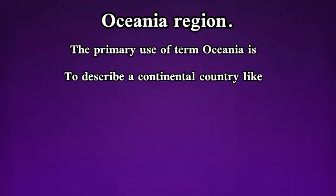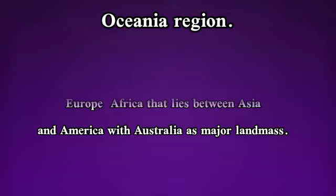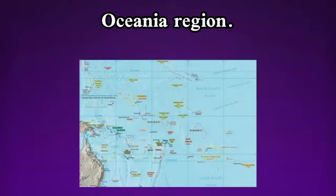The primary use of the term Oceania is to describe a continental region like Europe or Africa, that lies between Asia and the Americas, with Australia as a major landmass.